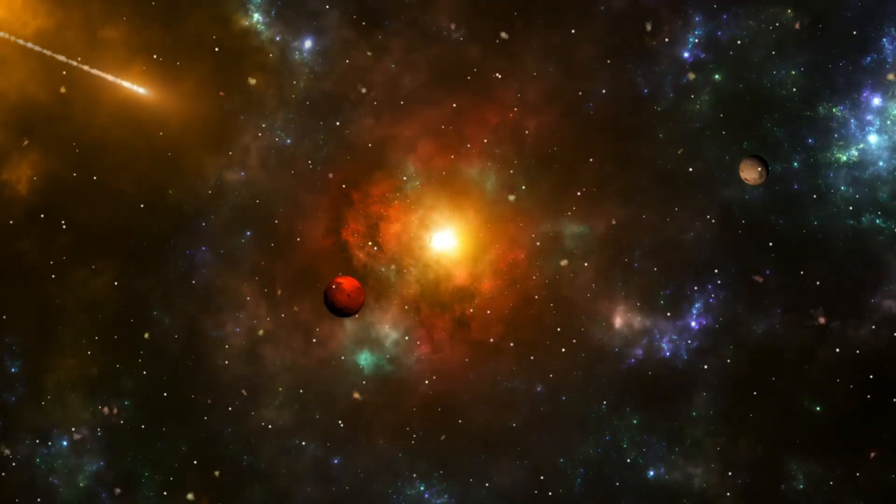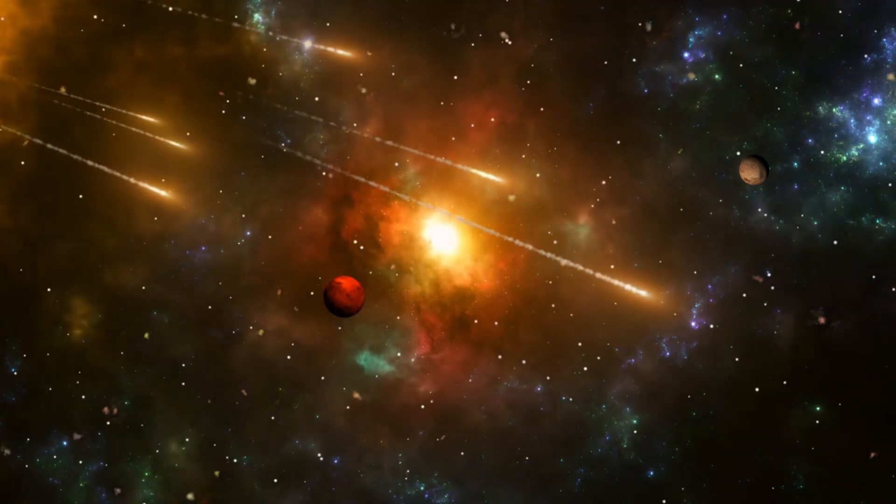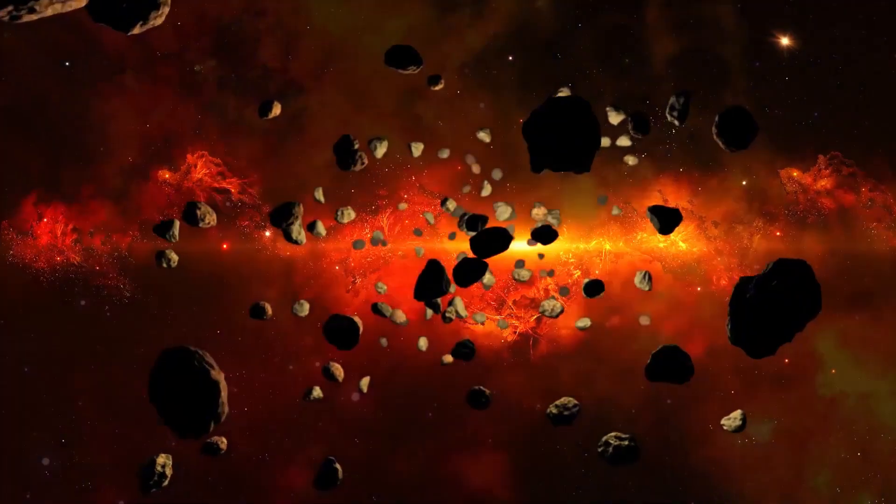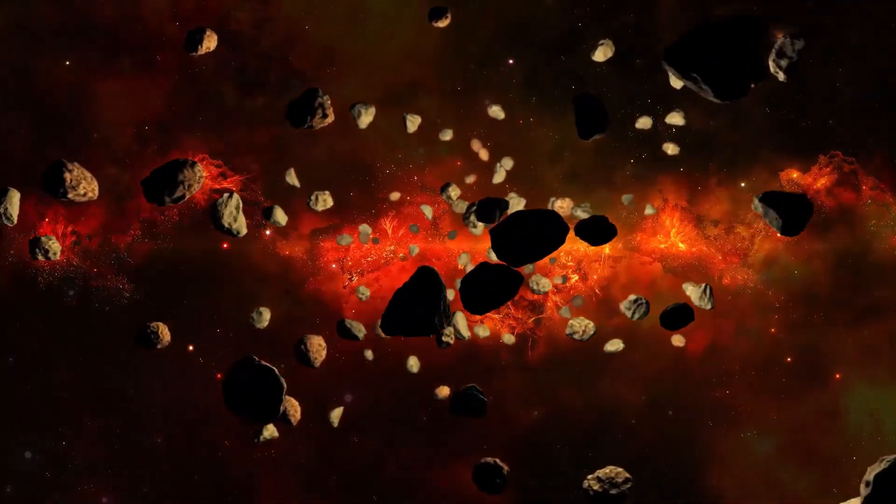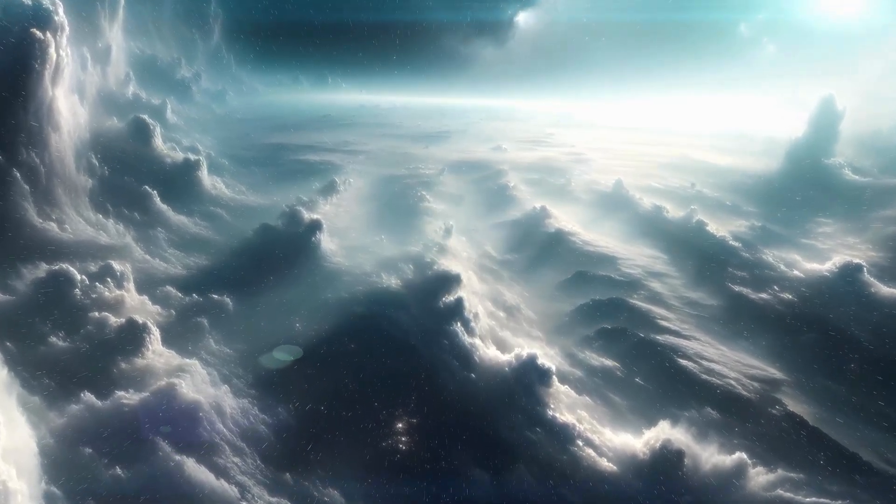The James Webb Telescope has produced the clearest image of Proxima b in history, uncovering stunning discoveries concerning this potentially habitable exoplanet. Join us as we set out on an endeavor through space to uncover the secrets of Proxima b and find out whether it might be the next Earth.